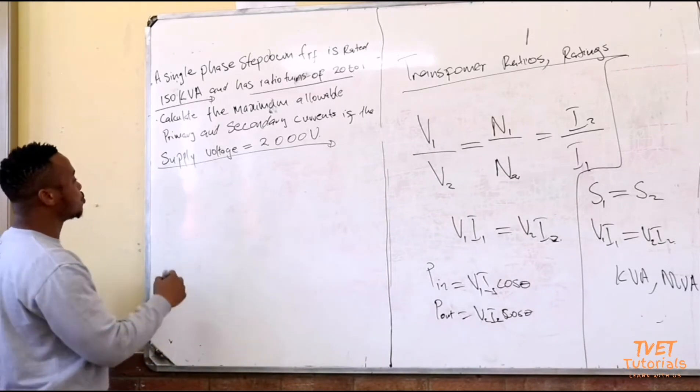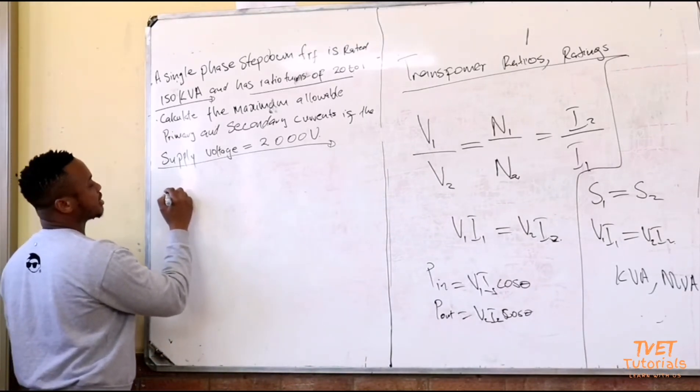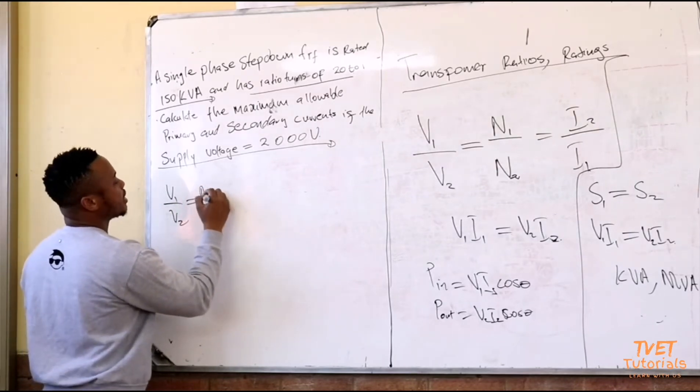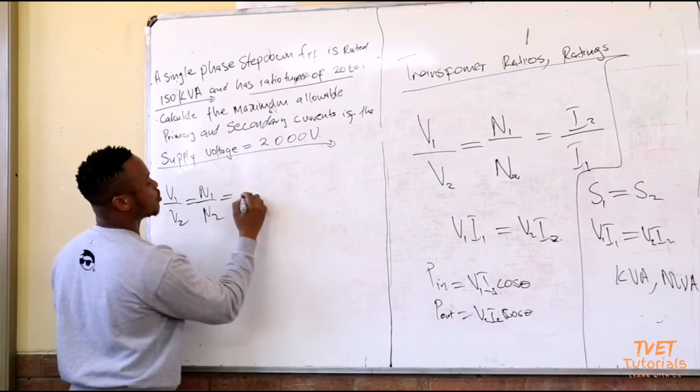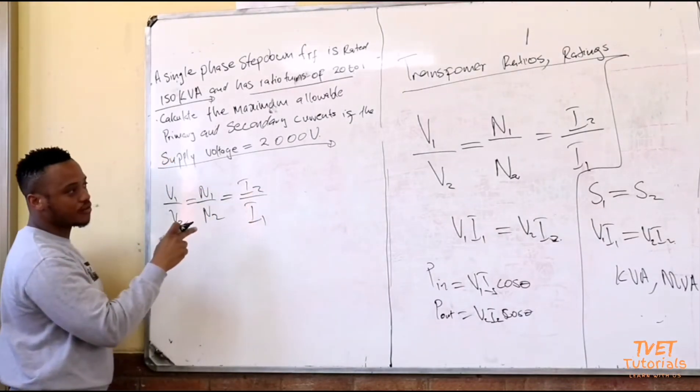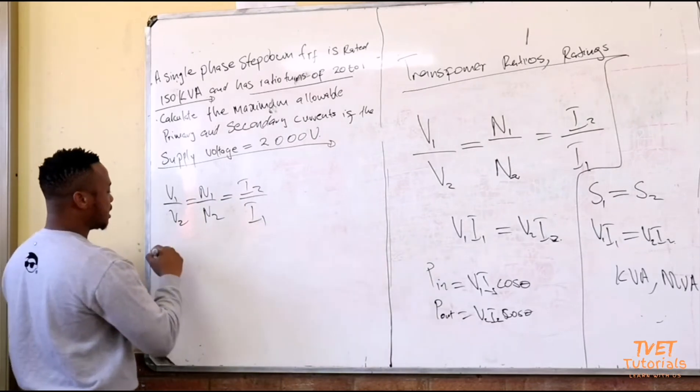Let's write down the equations that you are going to use. I will use the fact that V1 over V2 is equal to N1 over N2 which is also equal to I2 divided by I1.